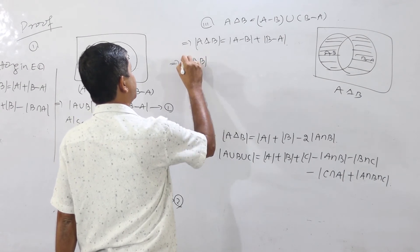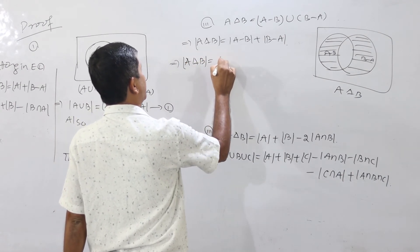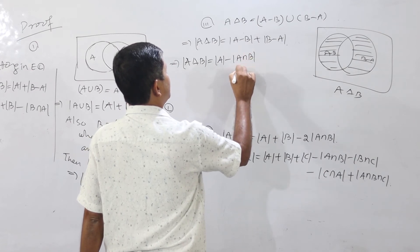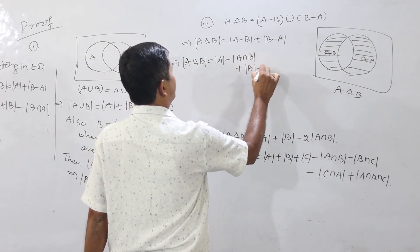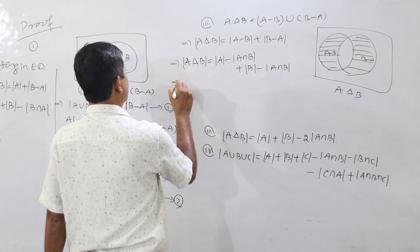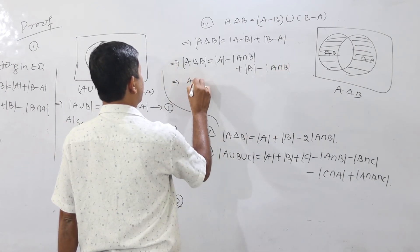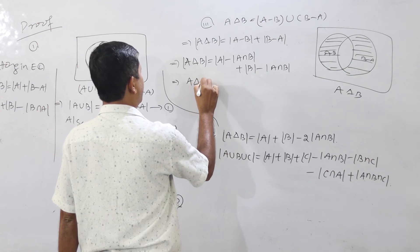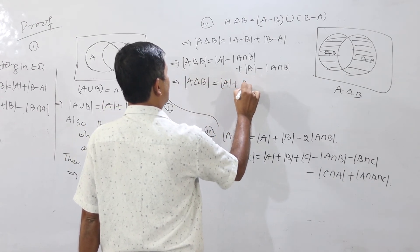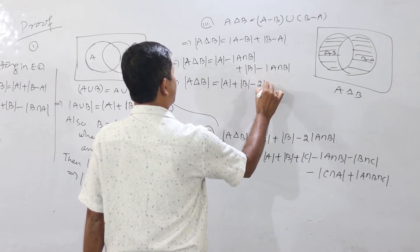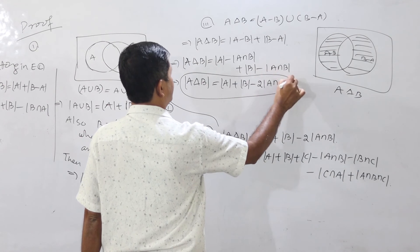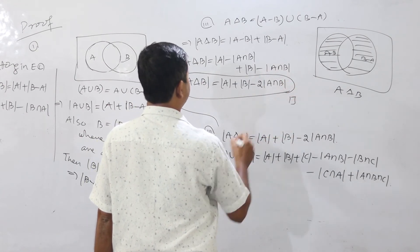Therefore, cardinality of A Δ B equals cardinality of A minus cardinality of A intersection B plus cardinality of B minus cardinality of A intersection B. Combining, this gives cardinality of A plus cardinality of B minus 2 times cardinality of A intersection B. Proved.